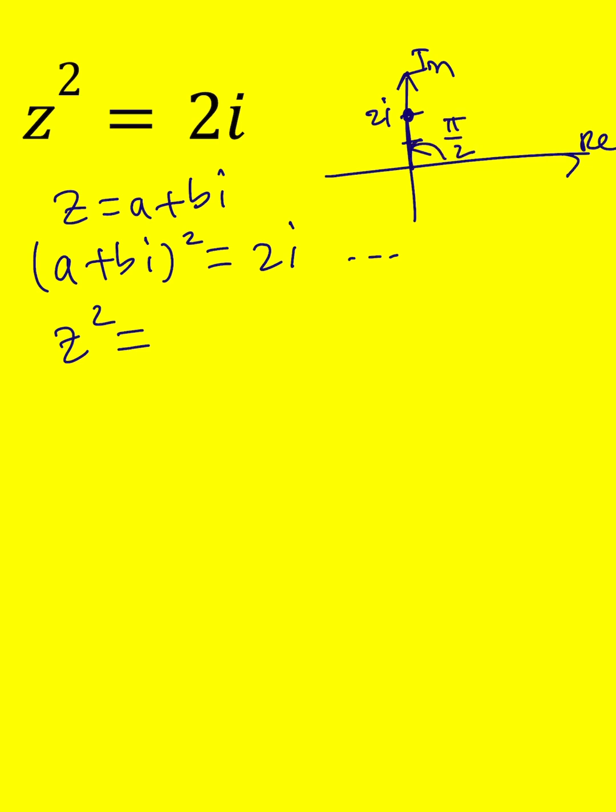So in other words we can write 2i as 2 times e to the power i times pi over 2. But of course that's not the whole story because you're allowed to add multiples of 2 pi to it, so you can basically add 2 pi n.